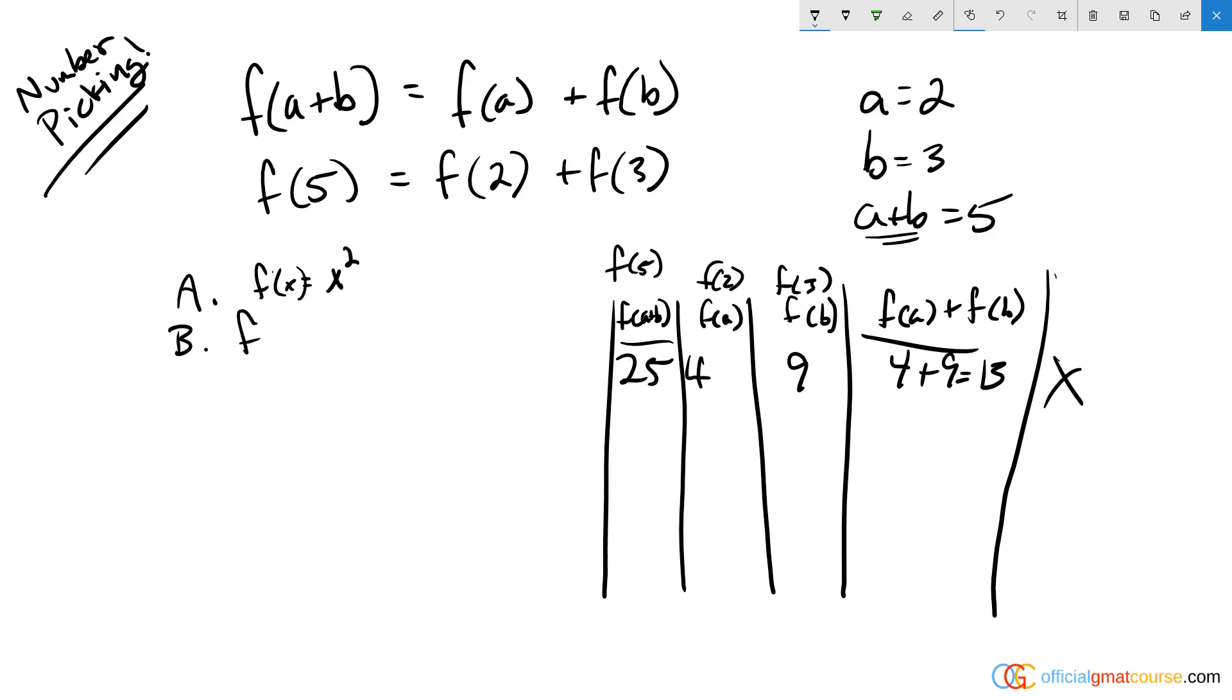B says f of x is equal to x plus one. So for f of five, that's going to be six. For f of two, we're going to get three, and for f of three, we're going to get four. Six does not equal three plus four, so that again is out.